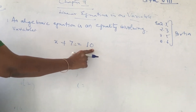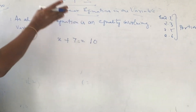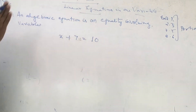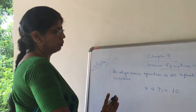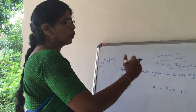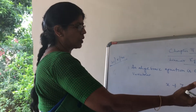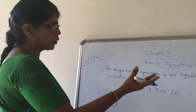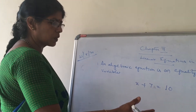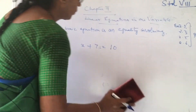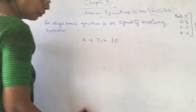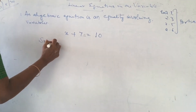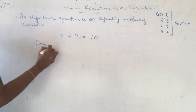x plus 7 is equal to 10. All of you follow one standard rule: variables on the left side and the numerical numbers will go to the right side. When you bring from left to right or from right to left, the signs will change. So shall we start the revision? Solve the following.